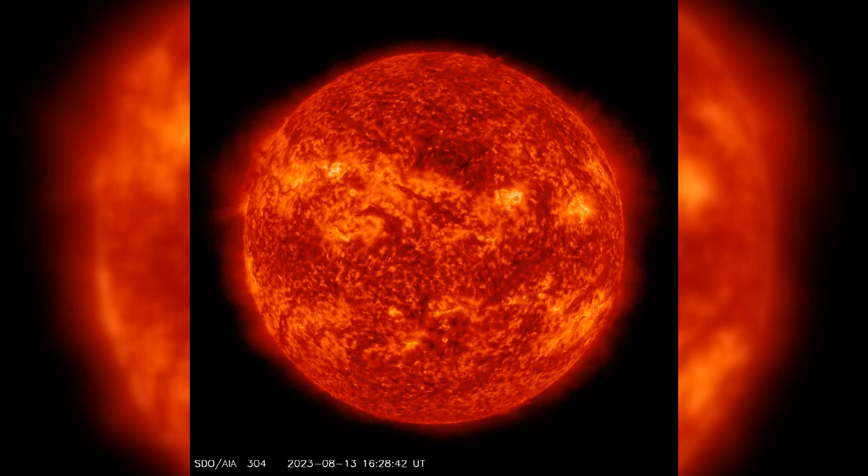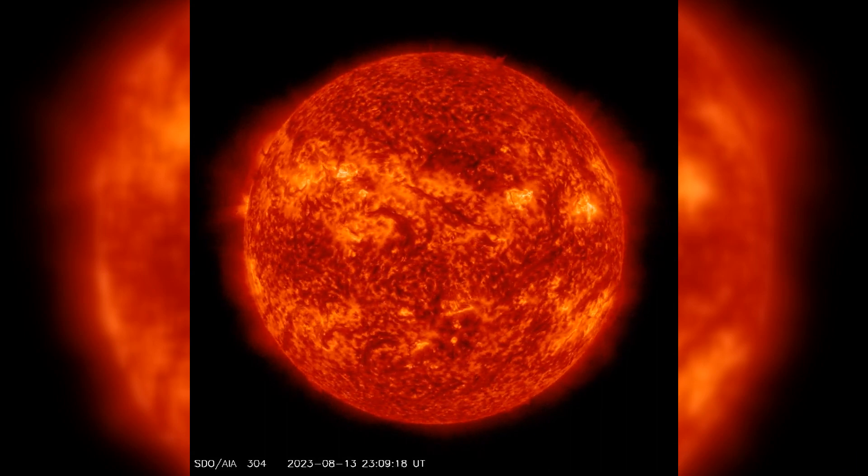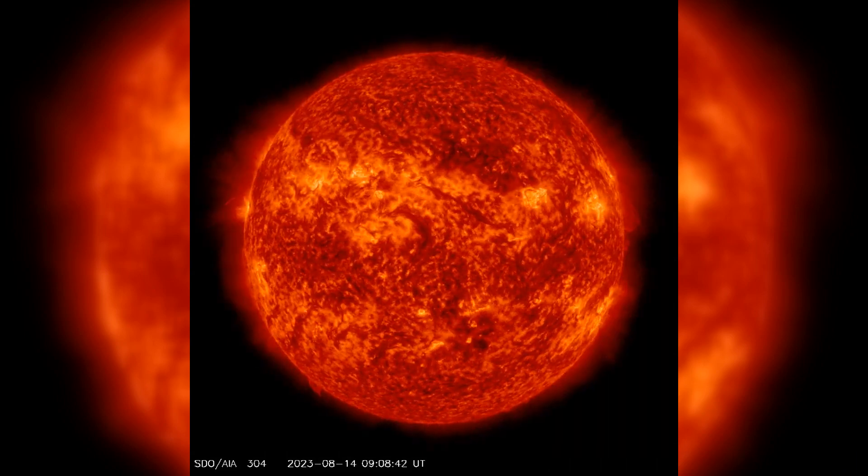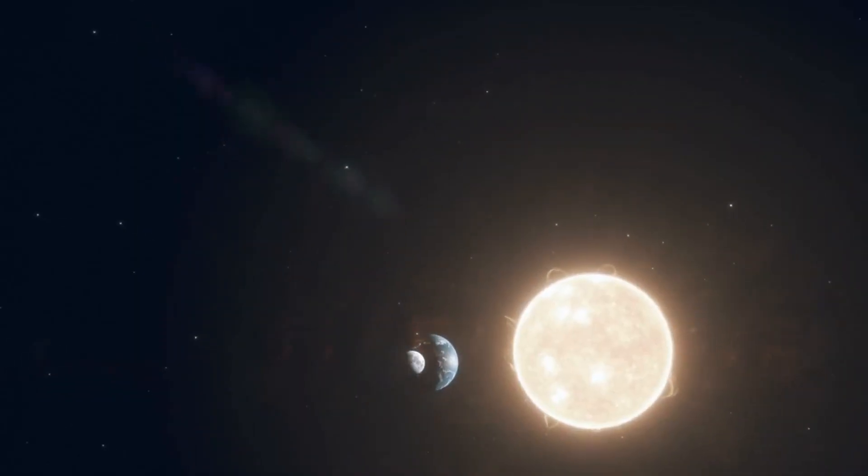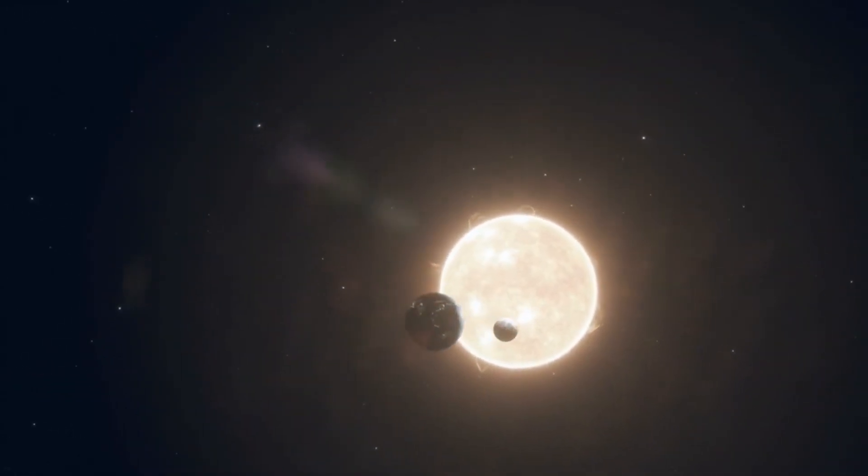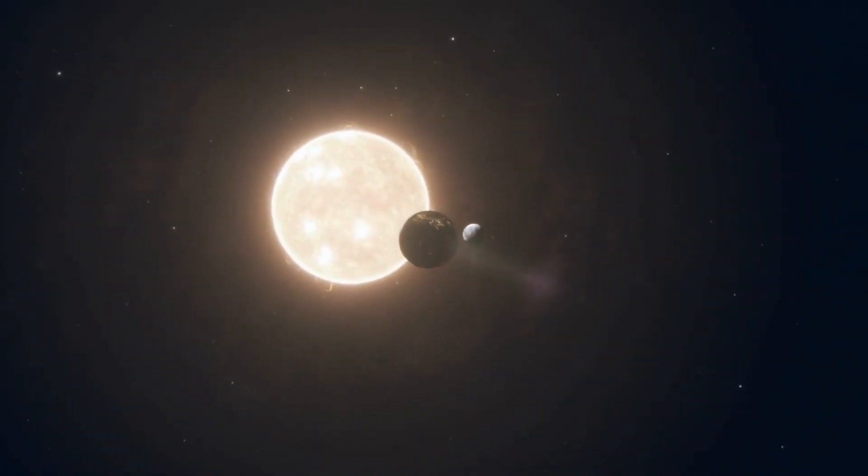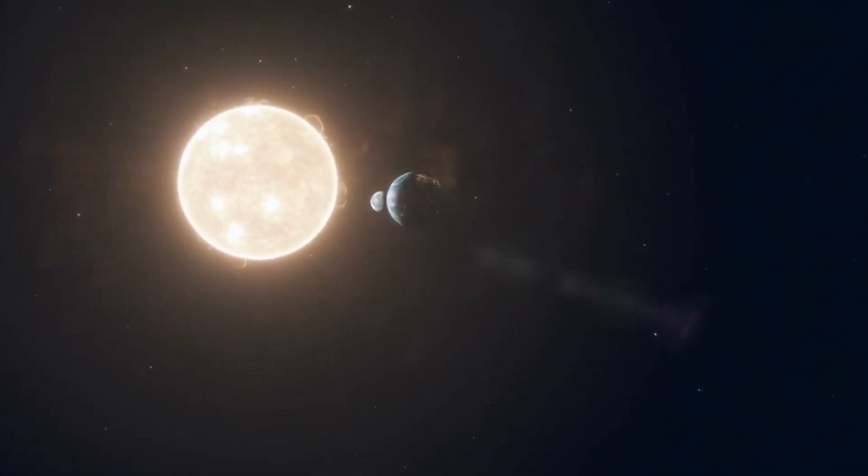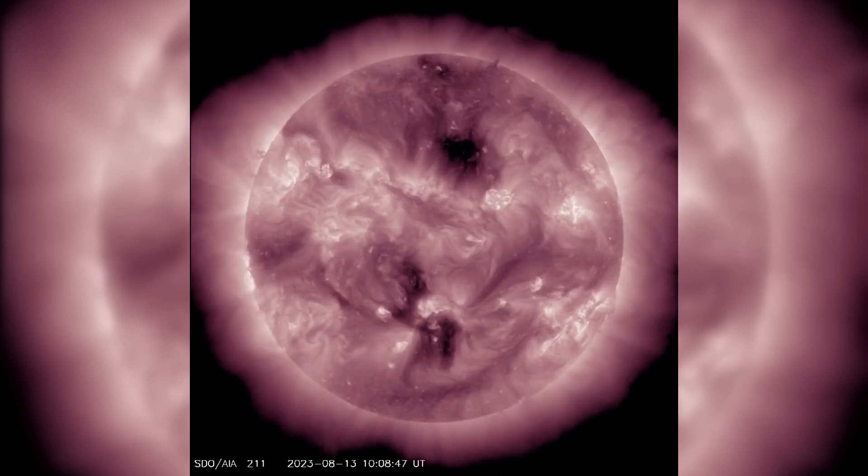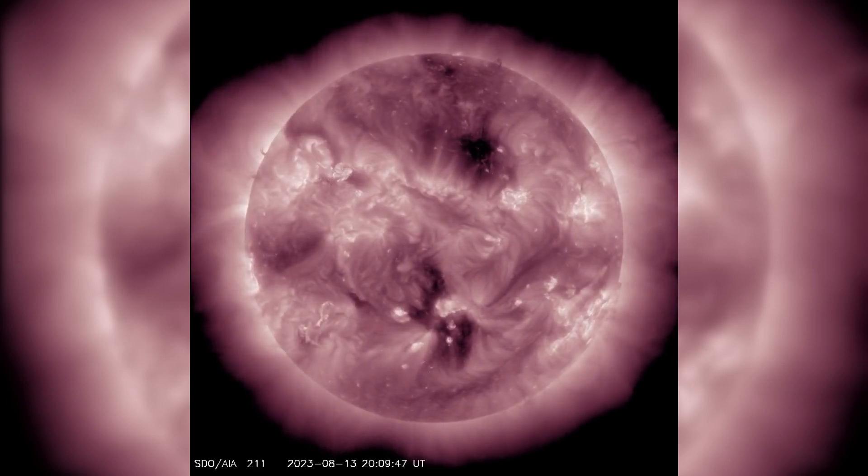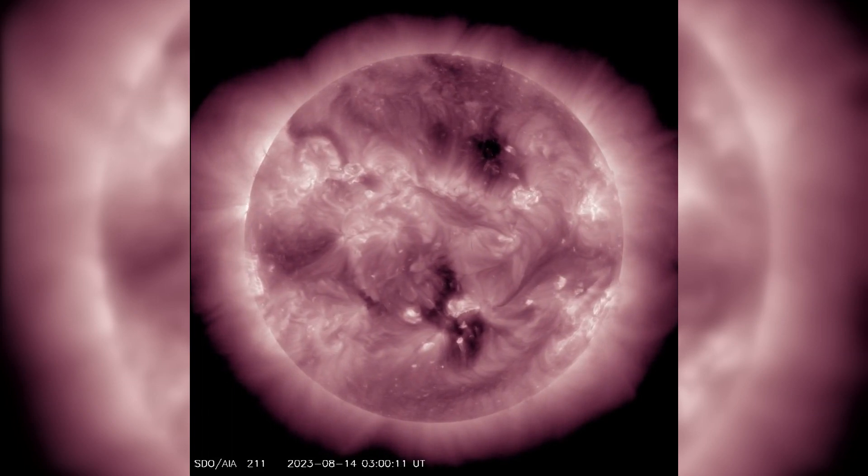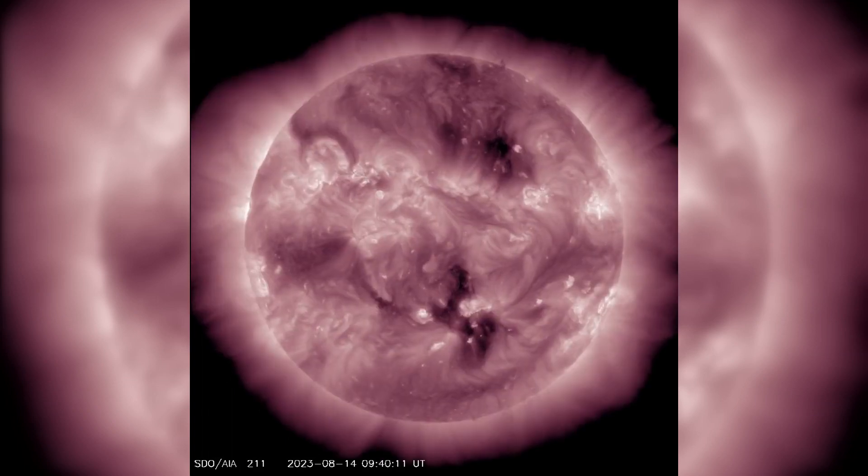An interesting addition to the scene is the emergence of a new flux region rotating around the northeastern limb. As we look ahead, the solar forecast hints at a slight chance of M-class solar flares occurring between August 14 and 16. While solar activity has maintained a subdued stance, the possibility of heightened flare activity during this time frame is something we're closely monitoring.